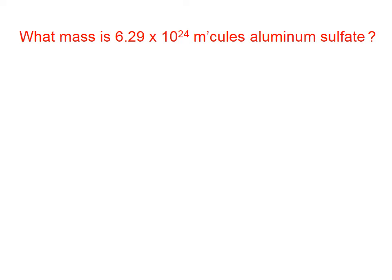Let's do a couple of examples. What mass is 6.29 × 10²⁴ molecules of aluminum sulfate? Now, technically, because aluminum sulfate is an ionic substance, we really should use the term formula unit instead of molecule.